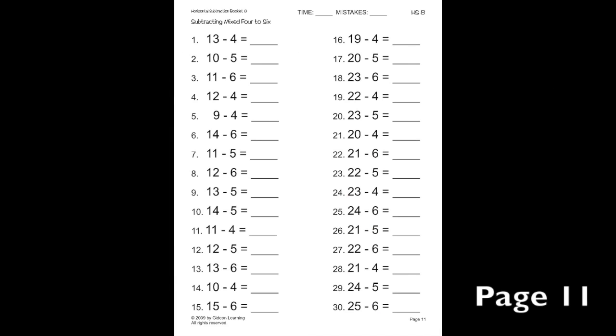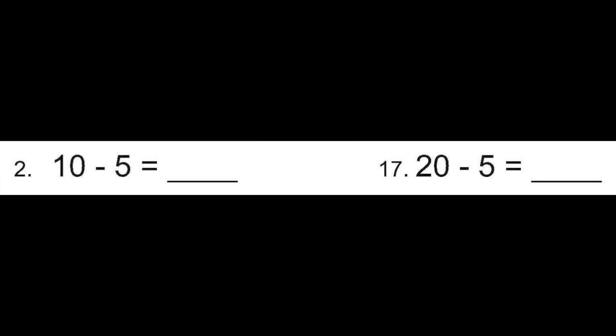On this page, we will focus on number 2 and number 17 first. On number 2, we have the problem 10 minus 5, which equals 5. Next to that is 20 minus 5, which is 10 more than 10 minus 5. So, 20 minus 5 equals 15. 10 more than 5.